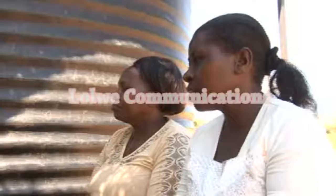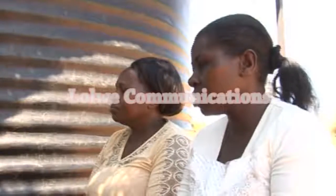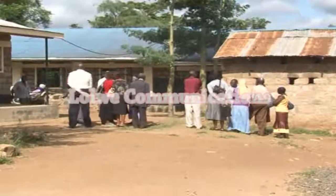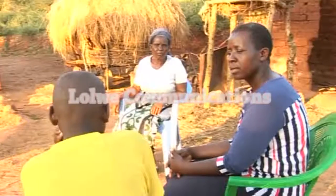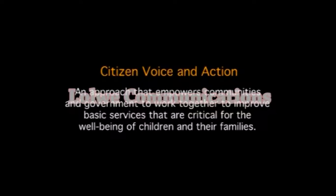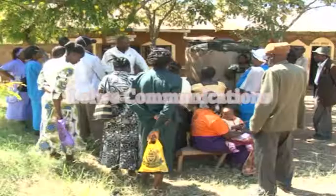Not many parents were well empowered to ensure accountability in basic education service delivery. World Vision Kenya found a solution to this dilemma through the utilization of the Citizen Voice and Action (CVA) approach. The CVA approach empowers communities and government to work together to improve basic services that are critical for the well-being of children and their families.